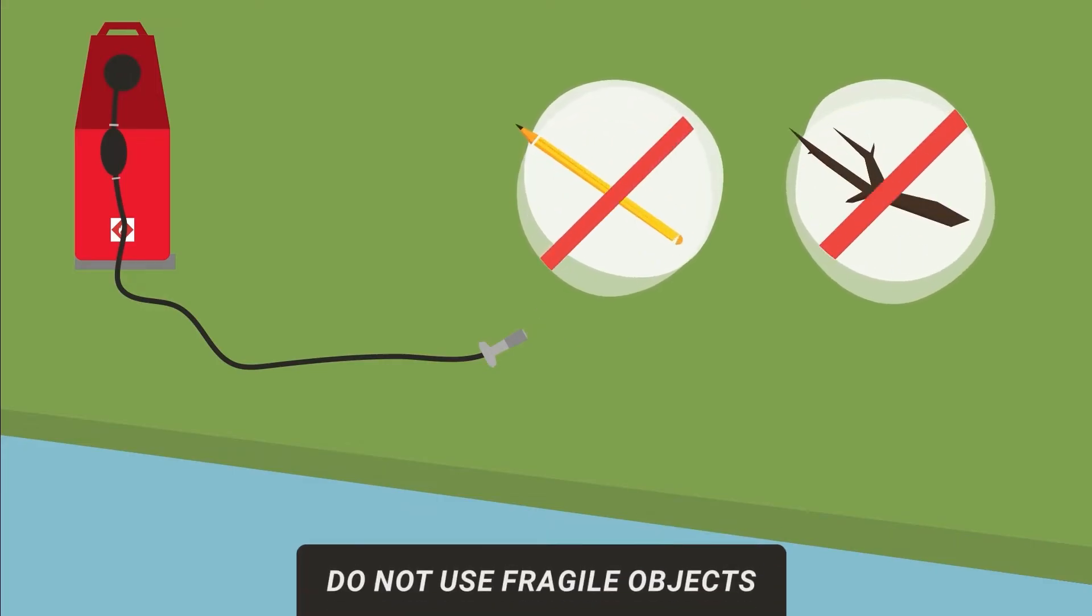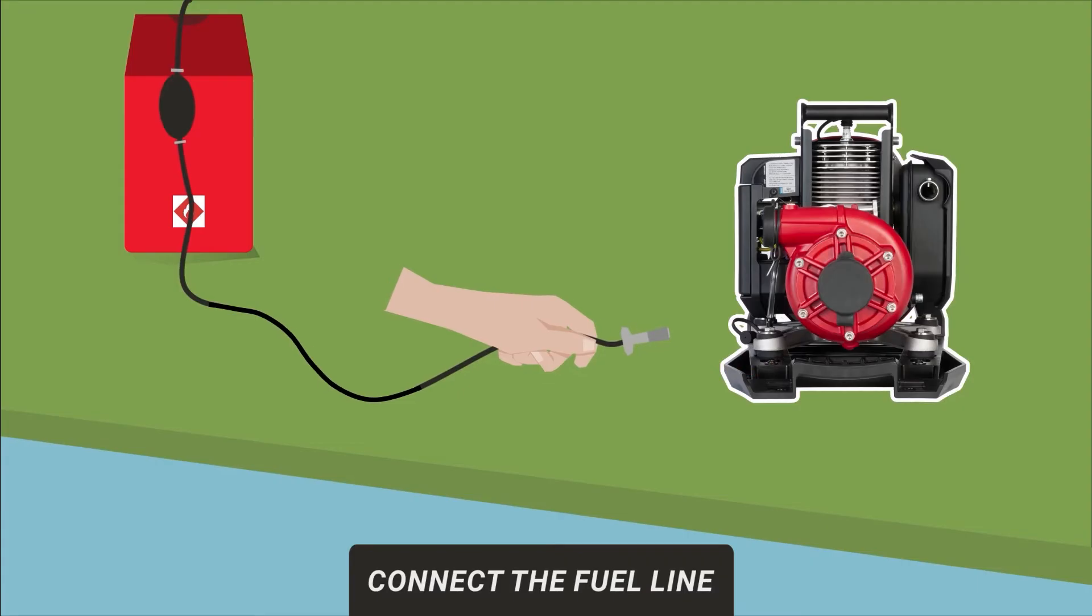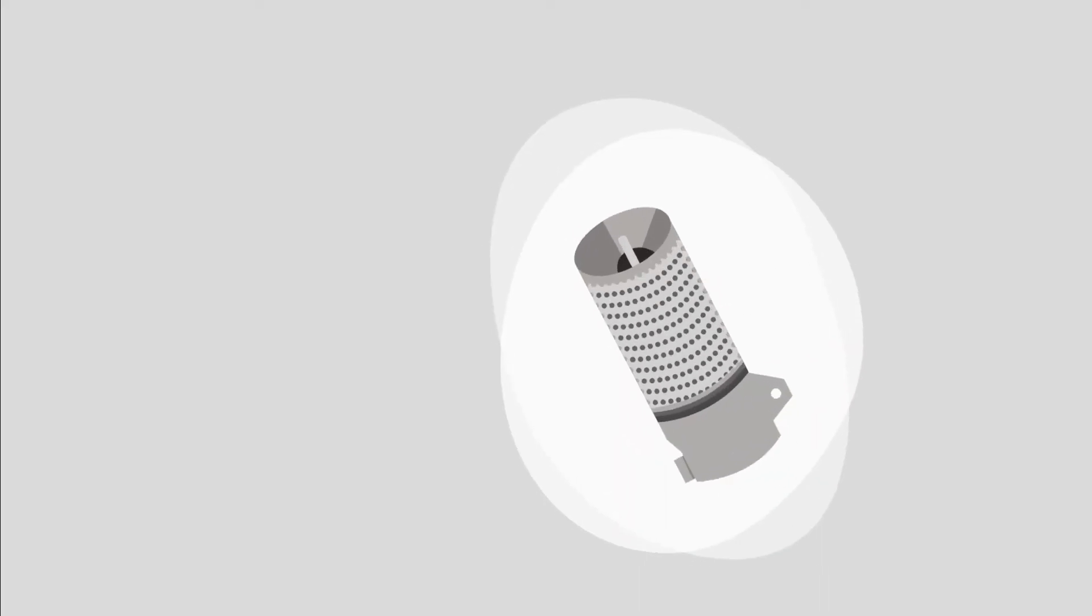Using objects like twigs or pencils can cause pieces to break and jam the Quick Connect ball valve. Firmly press the FuelLine connection onto the pump fuel connection and twist to lock in place.